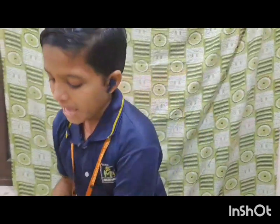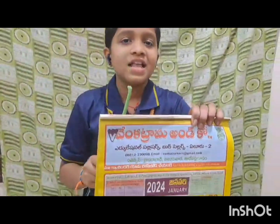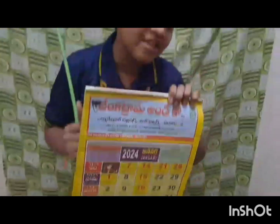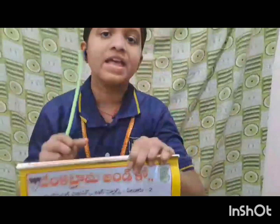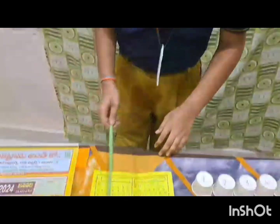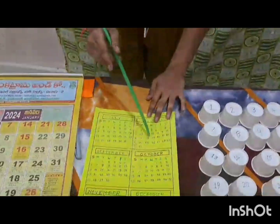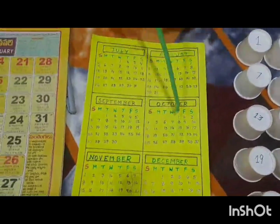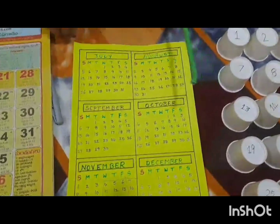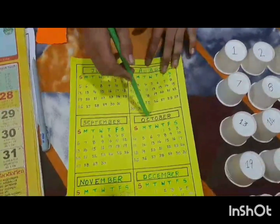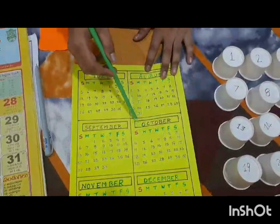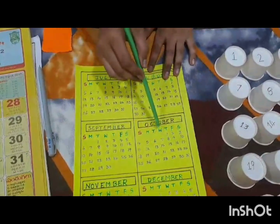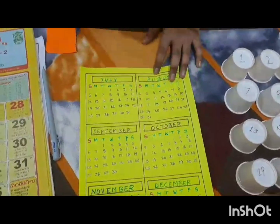In every house, at least there is one calendar. Do you think we can play with a calendar? Yes! I can show you now. Here I am showing a 6-month calendar. Select any one month. Oh! October! Good choice! Draw a square which contains 4 rows and 4 columns.